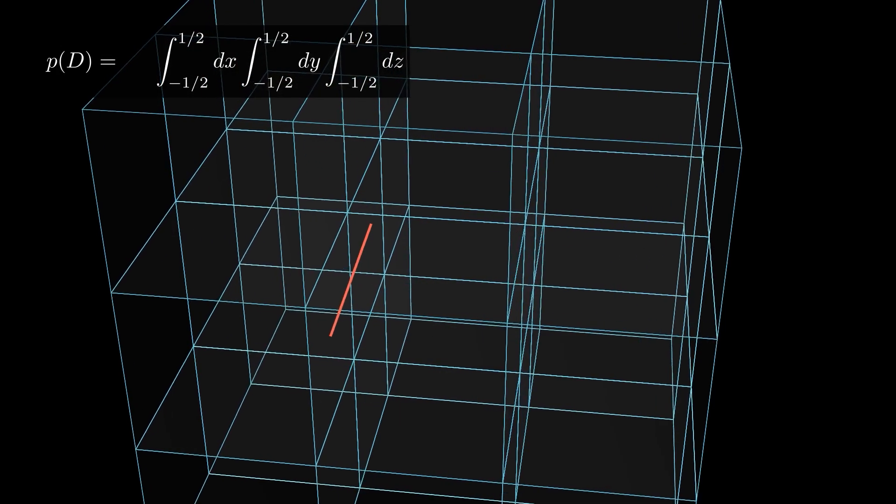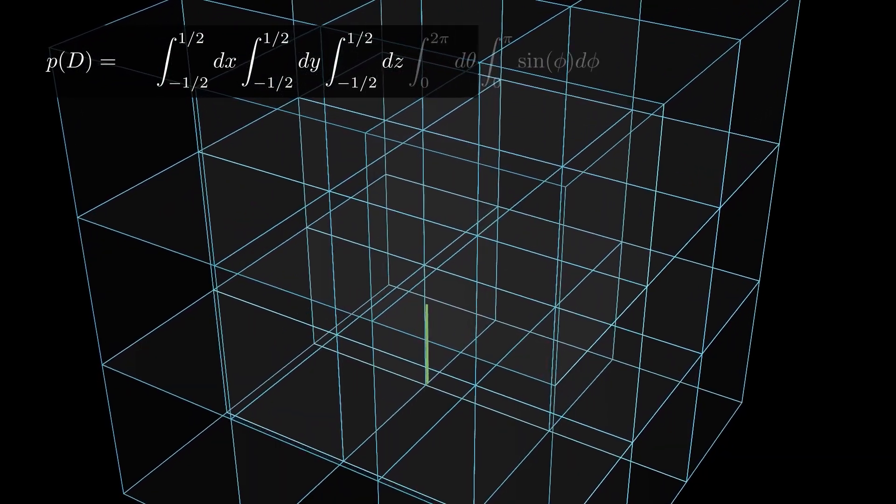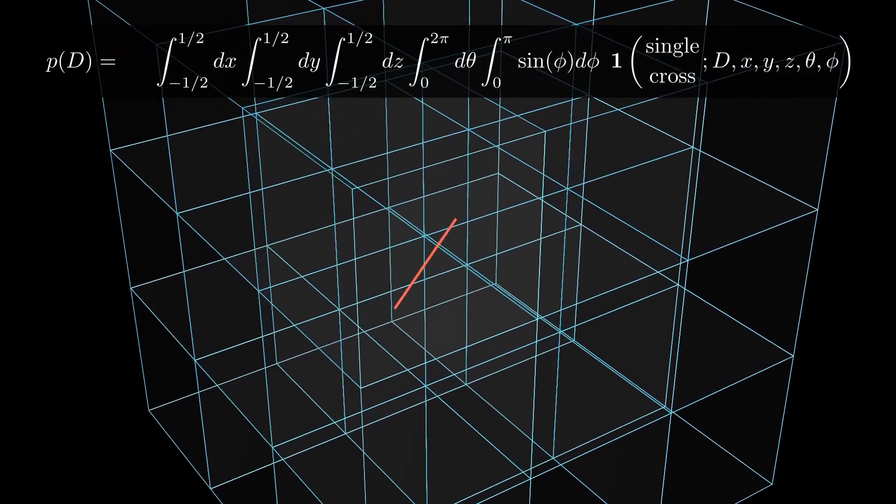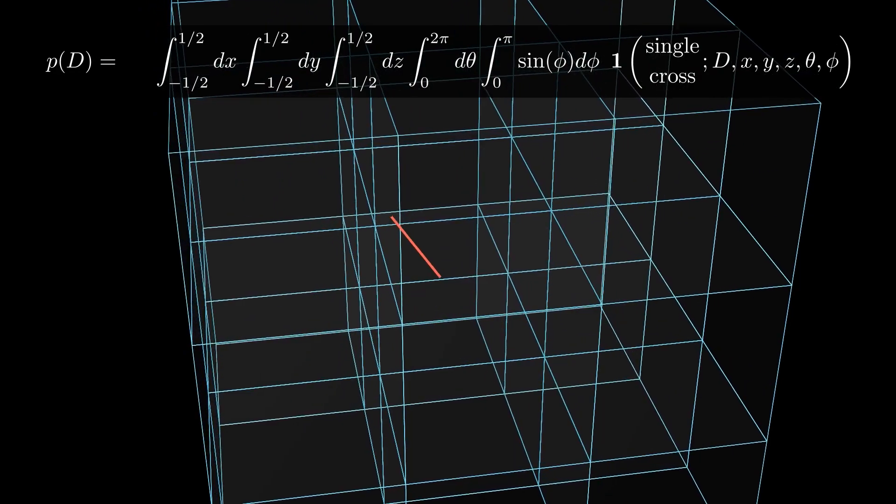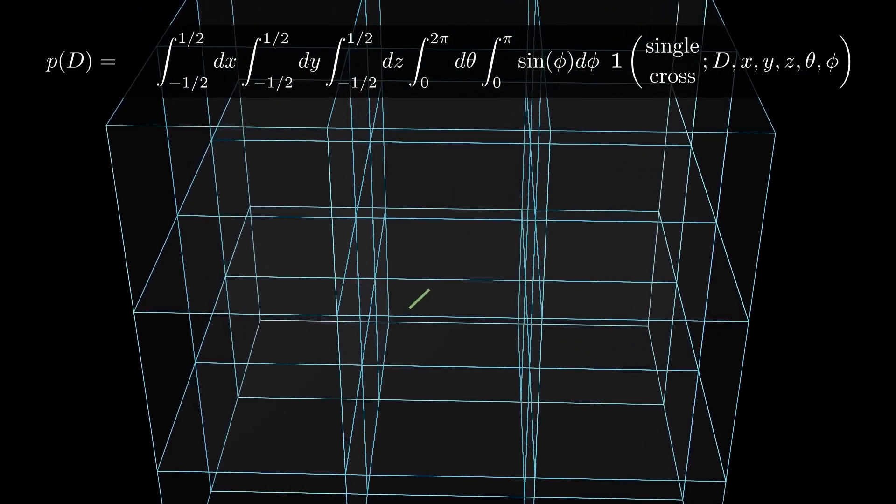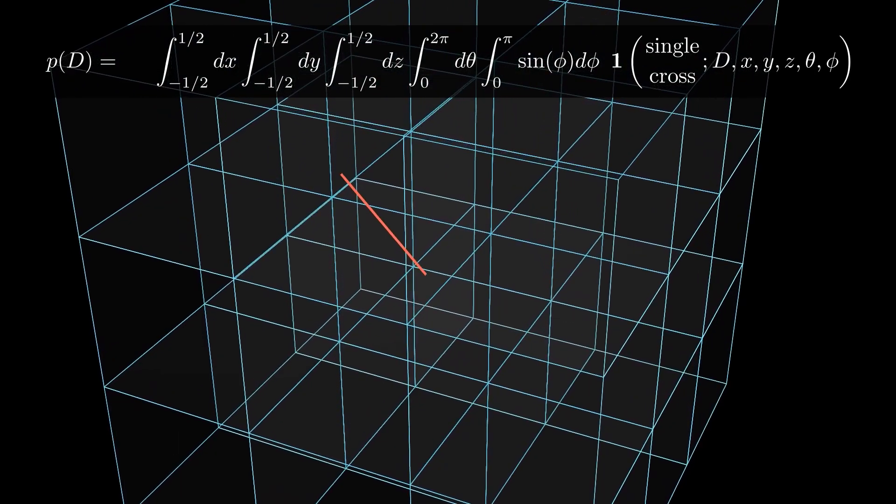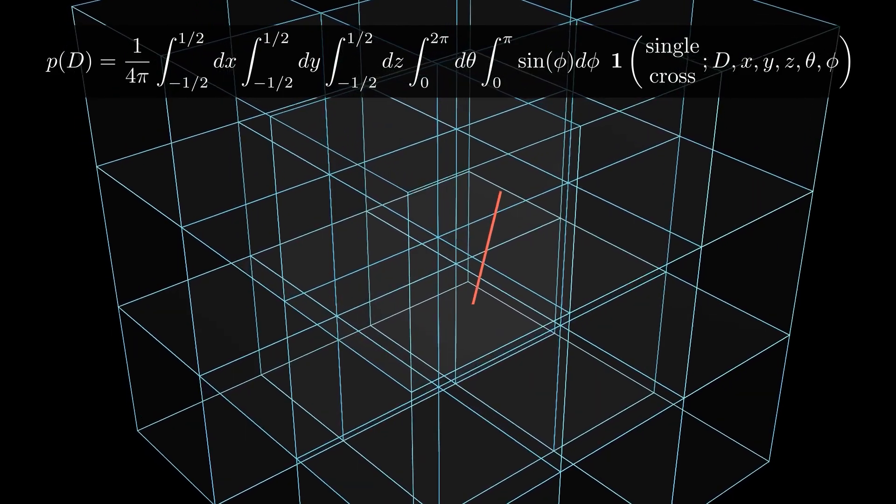To find this probability, our first instinct might be a brute force method, like integrating over all possible positions of the center of the line segment, and all possible orientations, and then determining how many of those have a single cross. Here, the bold one is the indicator function that returns one if there is a single cross with the given parameters, and zero if not. To get the probability, we then normalize by all of the possible positions and orientations.